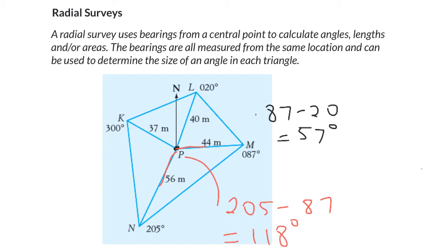In my third triangle KPN I can do the exact same thing using 300 minus 205 degrees. That's going to be 95.